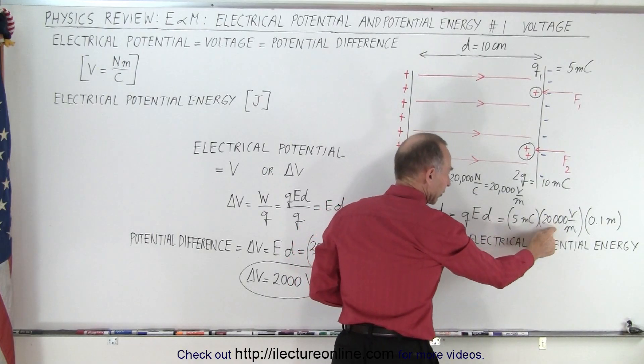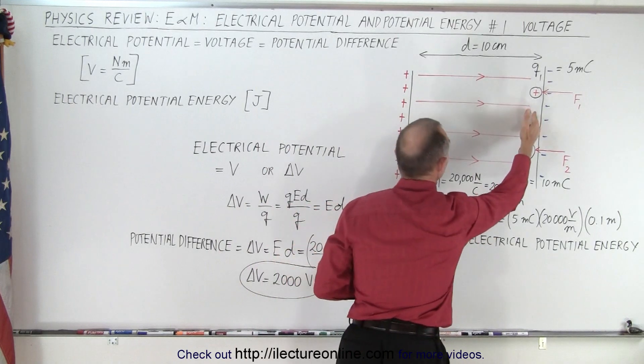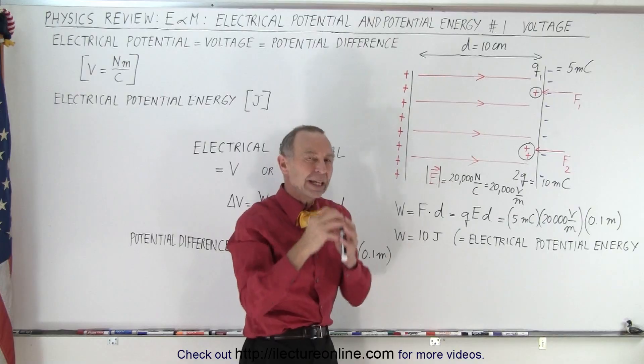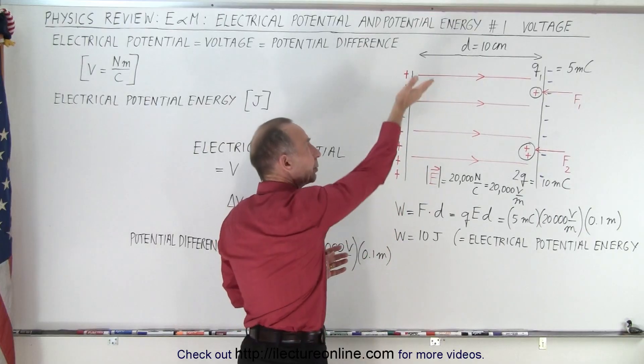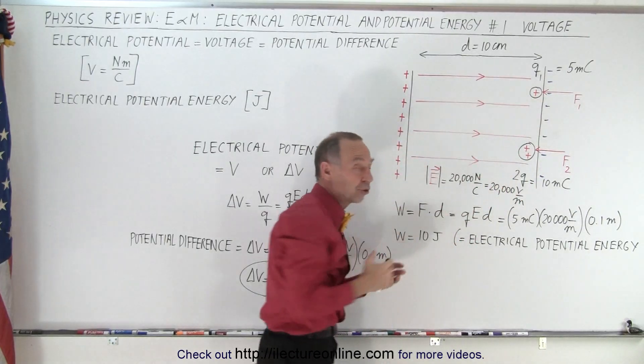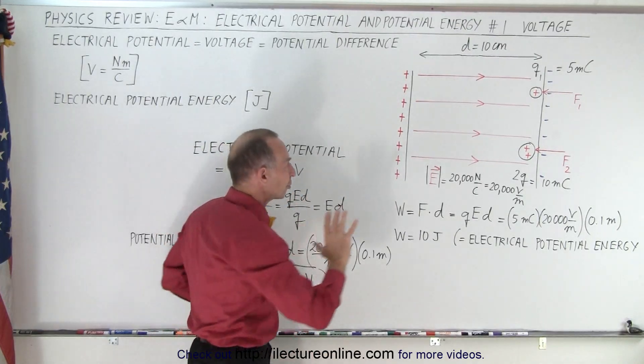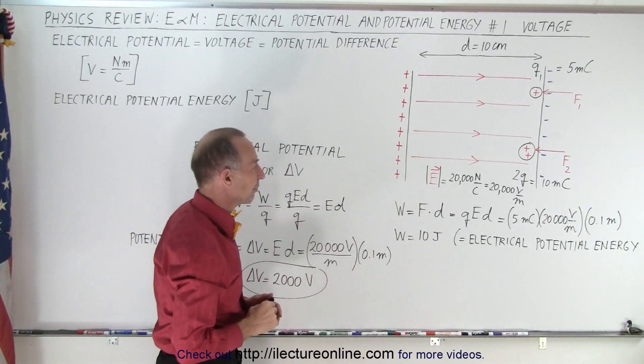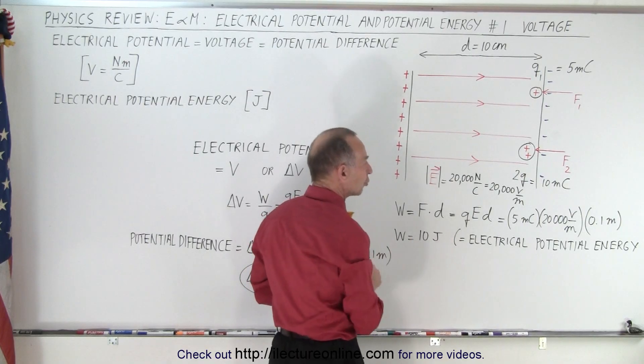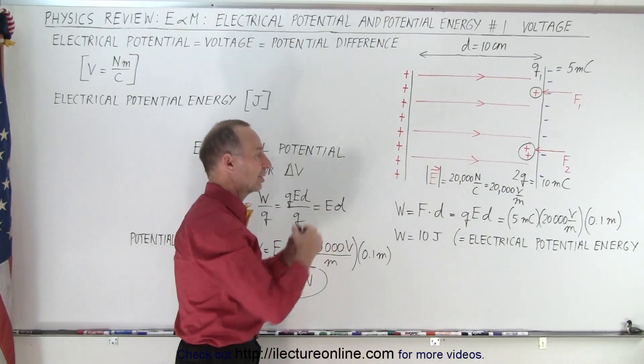So the work done is the charge times electric field (that's the force on the charge) times the distance we move it. So we have the charge, the electric field strength, and the distance moved, and that is then the work done to get the charge moved from one side to the other side. Once it's over here, it now has potential energy, just like when we lift an object up against gravity we give it potential energy. When we push a charge in the opposite direction (and that would be a positive charge in the opposite direction to the electric field), we also give it potential energy. It's like lifting something against gravity is pushing something against the electric field. And so the work done then equals the potential energy that it has. In this case it would be 10 joules, and that's then called the electrical potential energy, not the gravitational potential energy, the electrical potential energy.